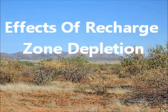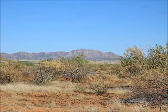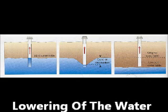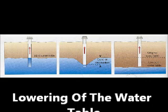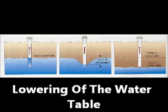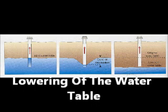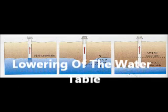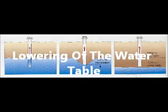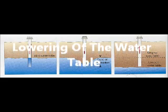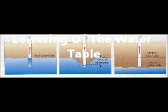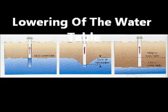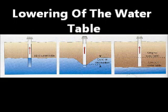Lowering of the water table is the most severe consequence of excessive groundwater pumping. In order for water to be withdrawn from the ground, water must be pumped from a well that reaches below the water table. If the groundwater level declines too far, then the well owner must deepen the well, drill a new well, or at least attempt to lower the pump.